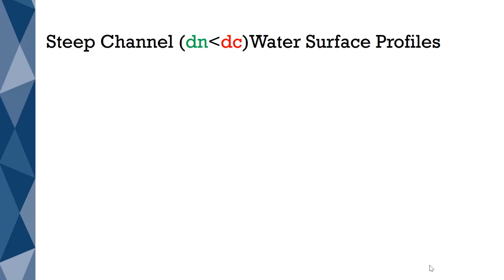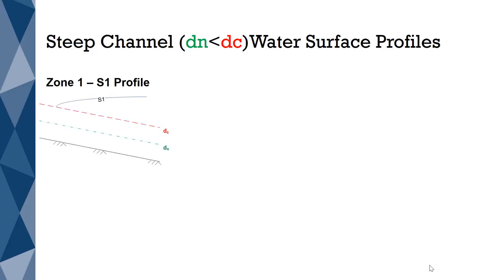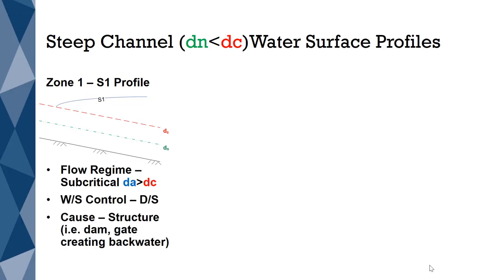The second channel type is a steep channel, where the normal depth is less than the critical depth. An S1 profile is formed in Zone 1, when the flow regime is subcritical. By definition, a subcritical flow occurs when the actual depth is greater than the critical depth. Flows that are subcritical are always controlled downstream. For an S1 profile, this is the result of a hydraulic structure, such as a dam, creating backwater.